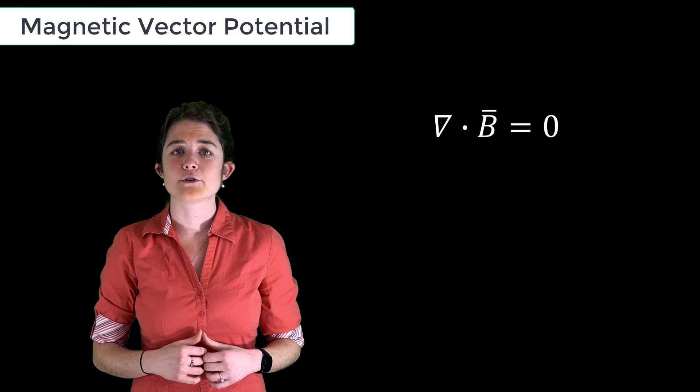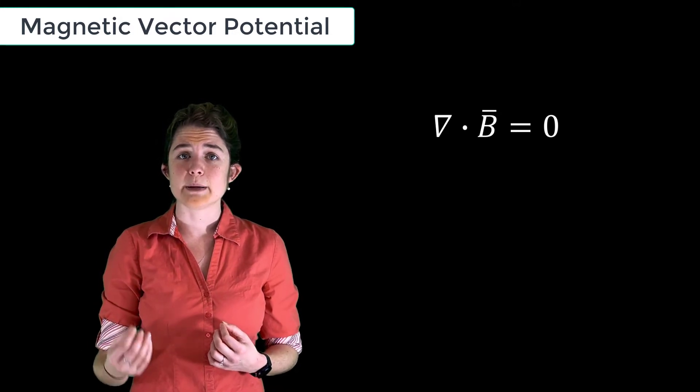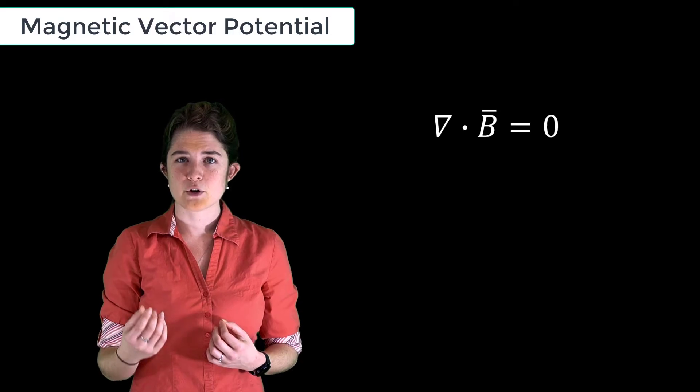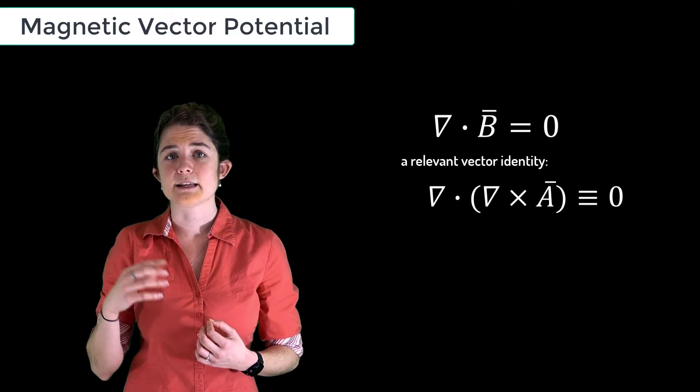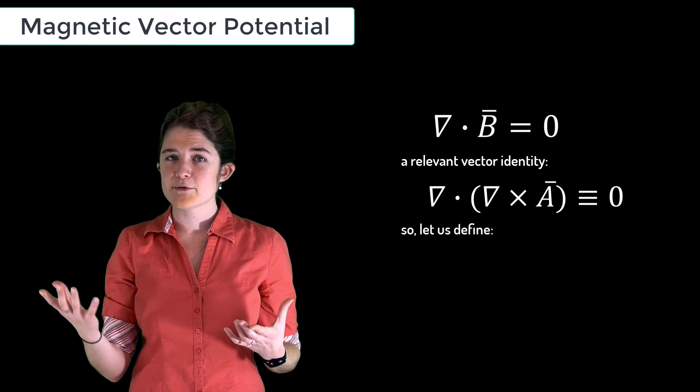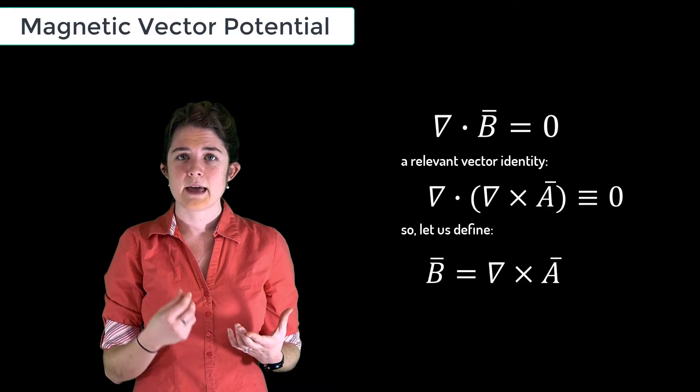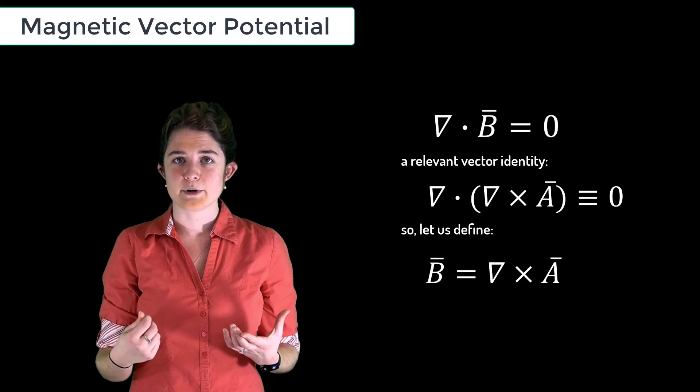Let's look at the solenoidal law. The solenoidal law says that the divergence of B is always zero. There's a vector identity that says the divergence of a curl is always zero. So let's define a vector field A and say B equals the curl of A. A is the magnetic vector potential, and the solenoidal law is embedded in its definition.